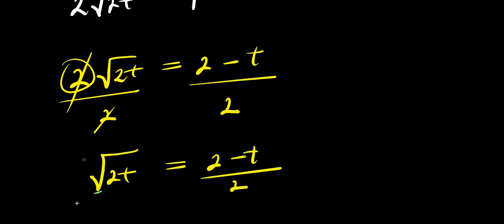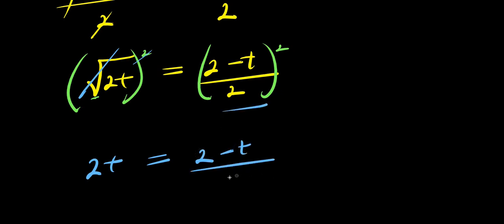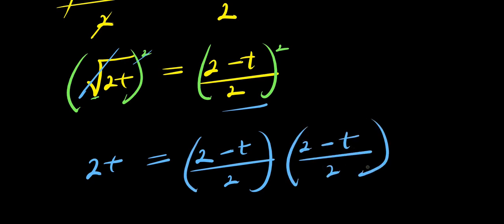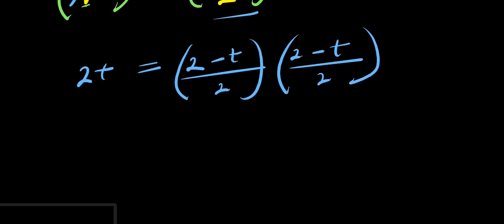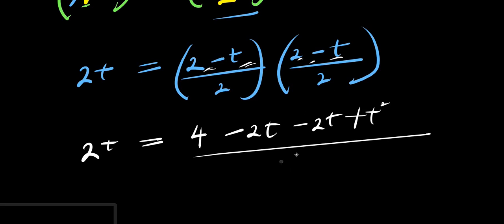I need to eliminate the square root again, so I take the squares of both parts of this equation. The square root cancels with the square, giving 2t equals the quantity 2 minus t divided by 2, times 2 minus t divided by 2. Expanding: 2 times 2 is 4, 2 times negative t is negative 2t, negative t times 2 is negative 2t, and negative t times negative t is plus t squared, all divided by 4.